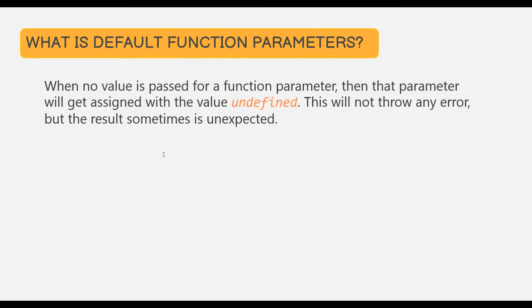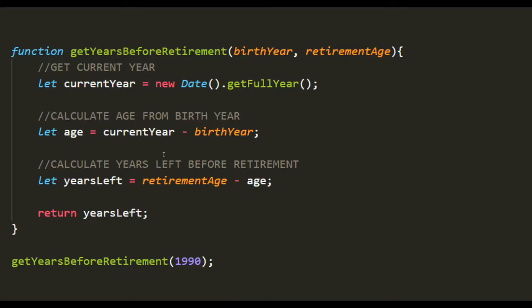That is because when no value is passed for a function parameter, that parameter gets assigned the value undefined. This will not throw any error, but the result is sometimes unexpected. When we call getYearsBeforeRetirement with only one argument, 1990 is assigned to birthYear, but retirementAge is assigned undefined — and that's why we get NaN in the console.